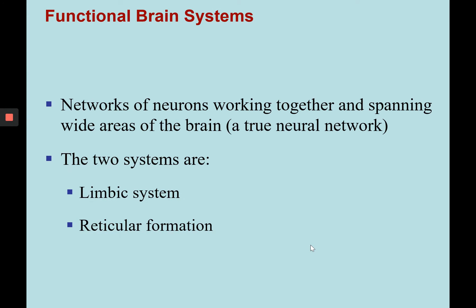Next, we're going to look at two functional brain systems. These are networks of neurons, not necessarily located in any one location, but networks that work together spanning wide areas of the brain — a true neural network. These two systems are the limbic system, known as your emotional brain, and the reticular formation, which you can think of as an alert system for your brain.